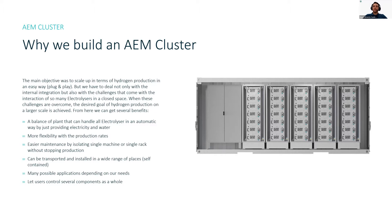For example, we can have a balance of plant that can handle all electrolyzers in an automatic way by just providing electricity and water — a plug-and-play solution. We have more flexibility with production rates since we can produce hydrogen with only one electrolyzer at 60% or 100% production rate of all electrolyzers. We get easier maintenance; we can isolate a single machine or a single rack without stopping production. As all electrolyzers are in a container, they can be transported and installed in a wide range of places because it is self-contained.